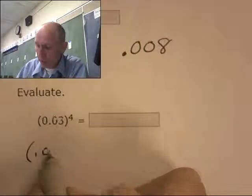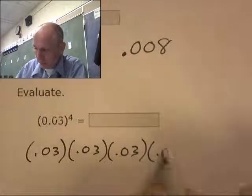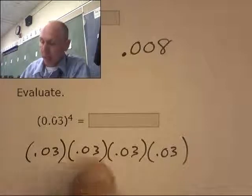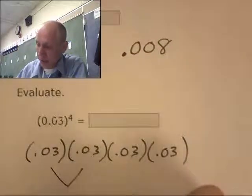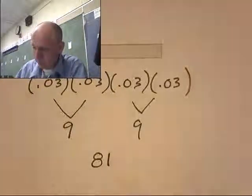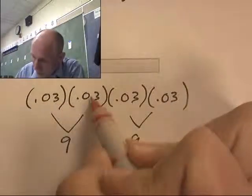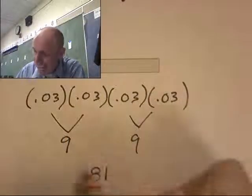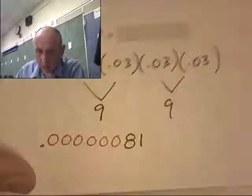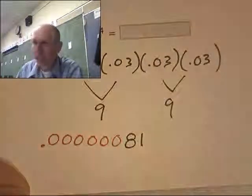This is to the 4th power, which means I need to write it out 4 times. Oh man, those decimals. Ignore them. This is 3 times 3 times 3 times 3. This is 9 times 9, and what is that, 81? So it's something like 81, but how many decimal places? One, two, three, four, five, six, seven, eight decimal places. There we go. Is that eight? One, two, three, four, five, six, seven, eight decimal places.